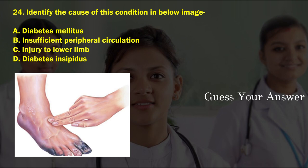Identify the cause of this condition in the below image. Option A: diabetes mellitus, option B: insufficient peripheral circulation, option C: injury to lower limb, option D: diabetes insipidus. The correct answer is option B, insufficient peripheral circulation.